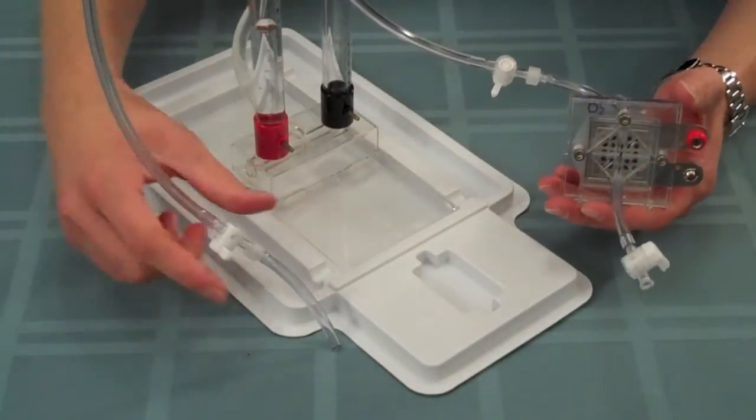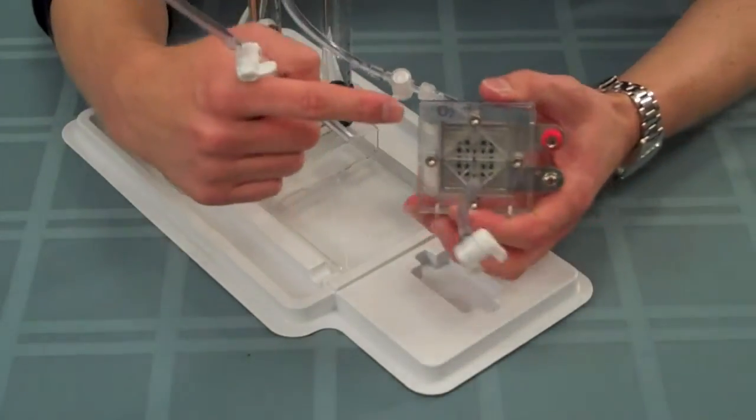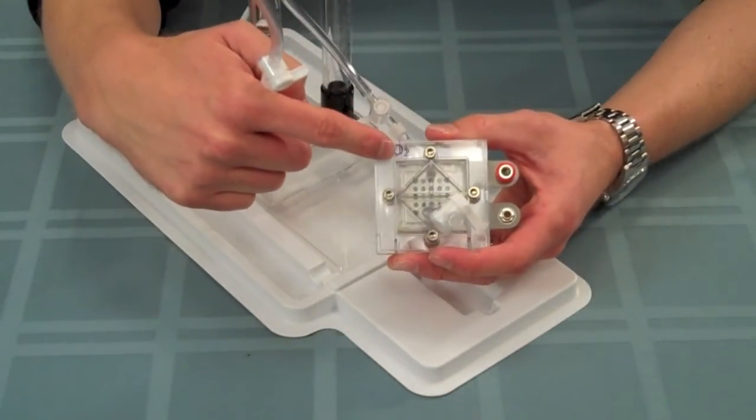Next, take the oxygen gas supply tube and connect it to the side of the fuel cell labeled oxygen.